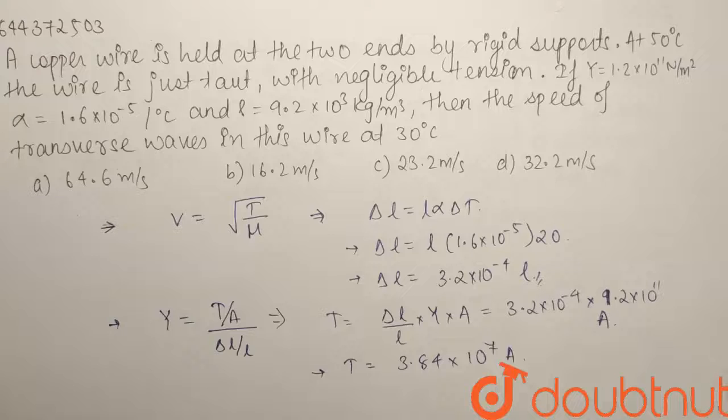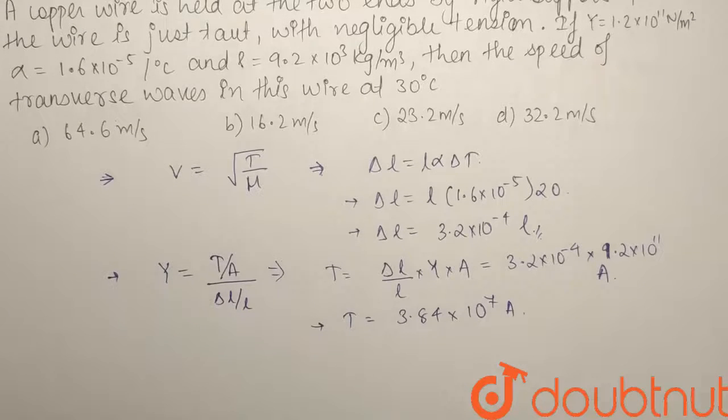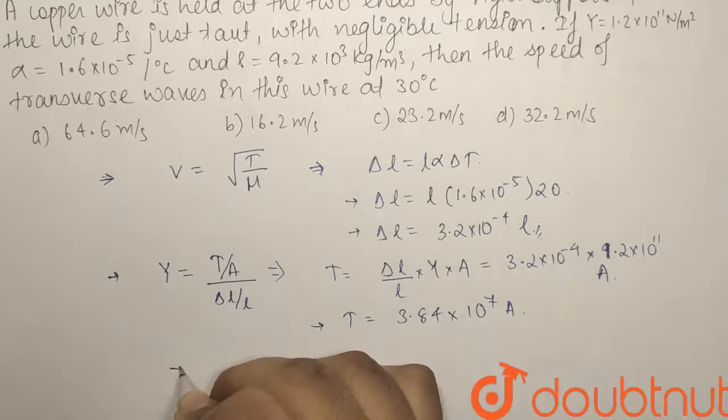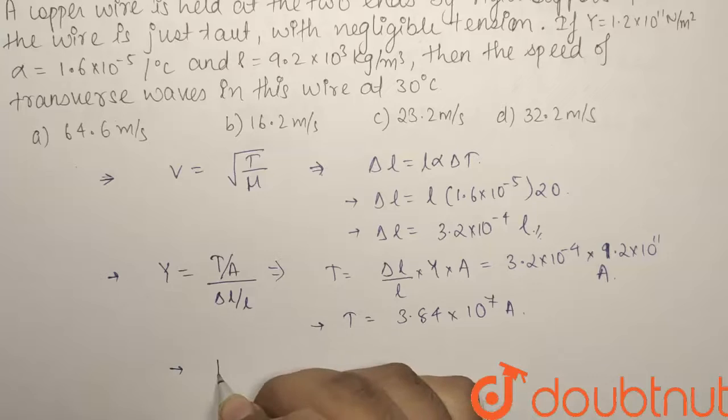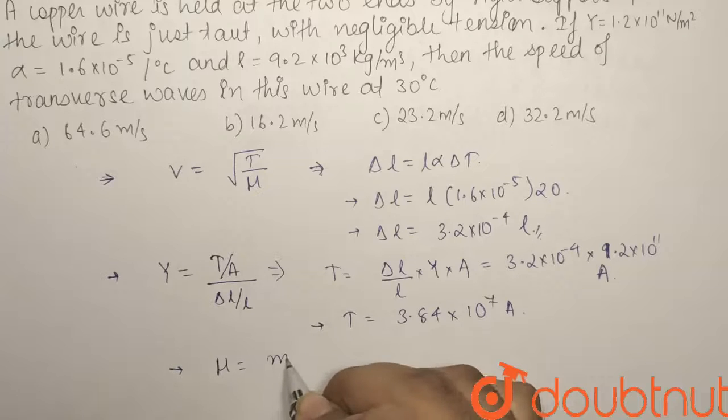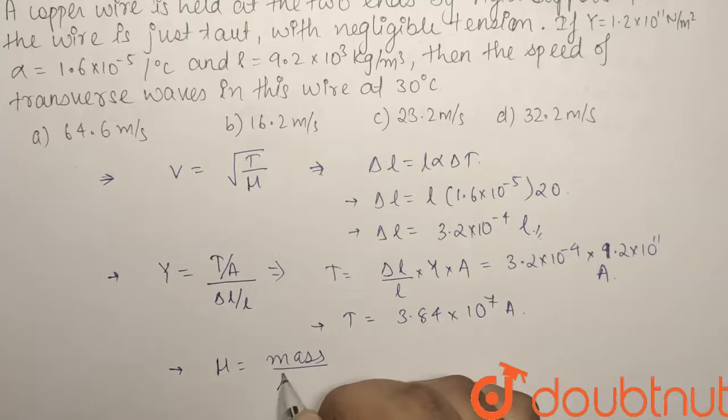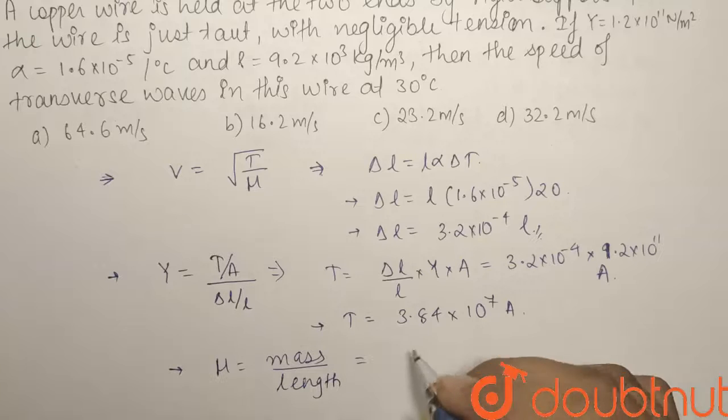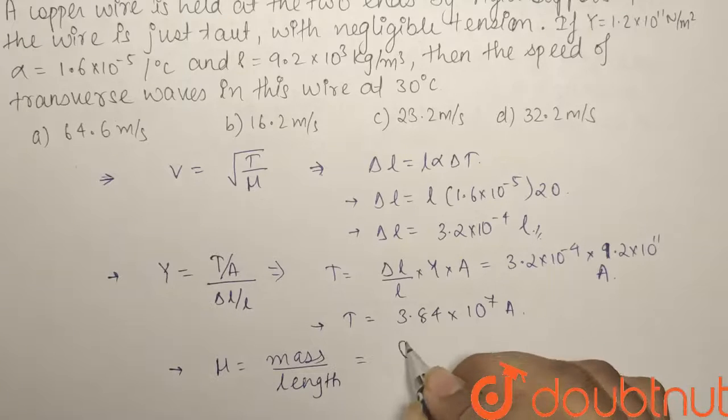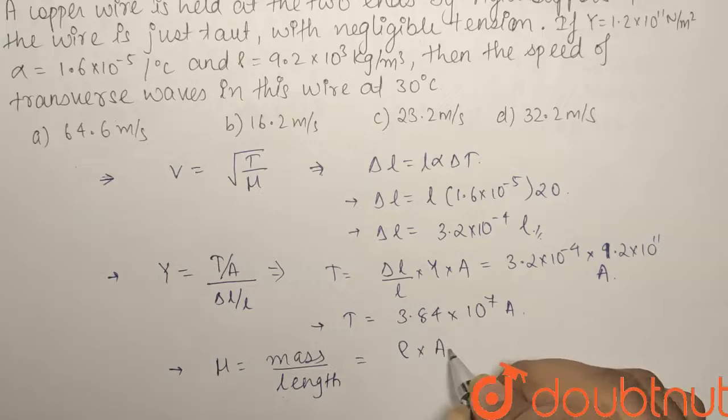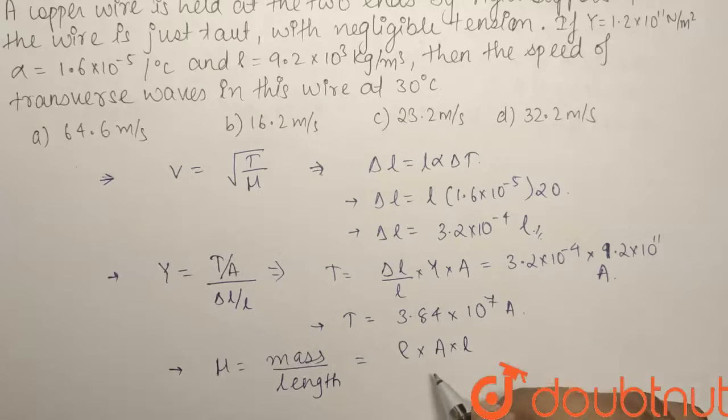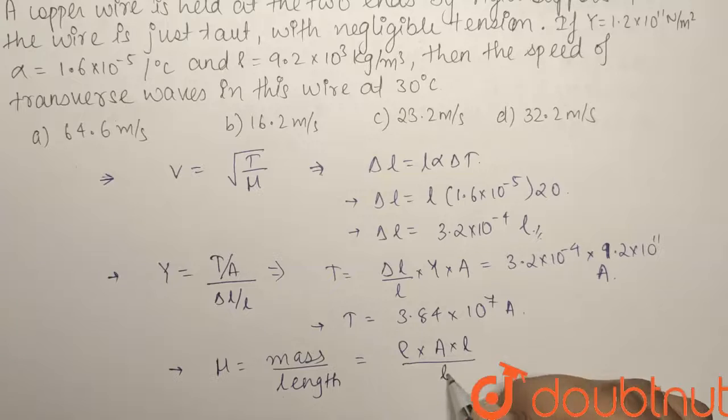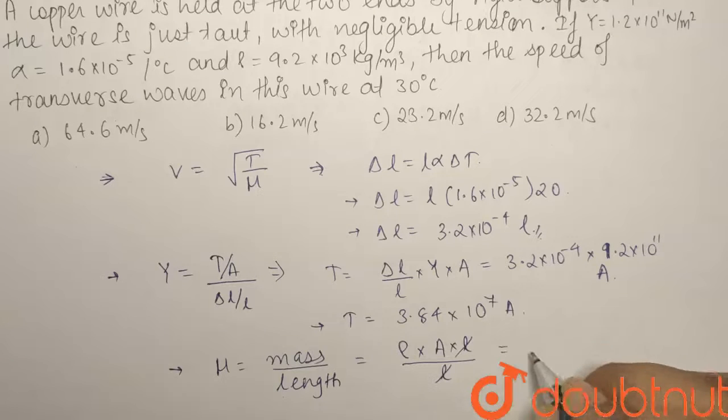Now, the next thing we have to find out is μ because we have already calculated tension. To calculate μ, μ is what? Mass per unit length. How can you write mass? Mass can be written as density × area × L. Area × length will be volume and density × volume will be mass divided by the length L, so L and L will cancel out. So you can replace μ by ρA.